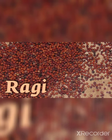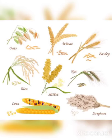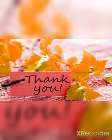So, in this class we have seen grains. The grains we covered are wheat, maize, rice, beans, peas, barley and millet. Okay children, we will meet in the next class. Thank you, children.